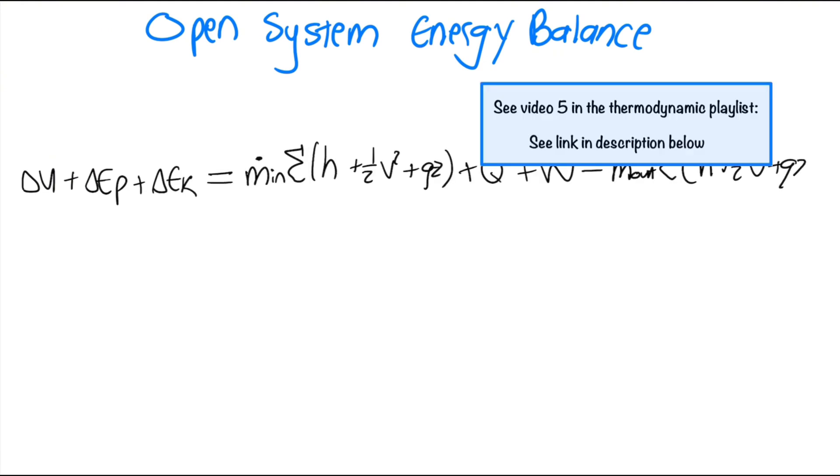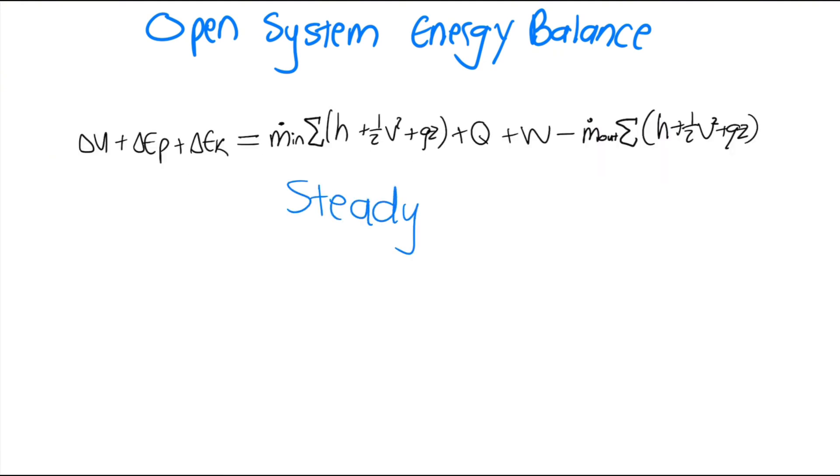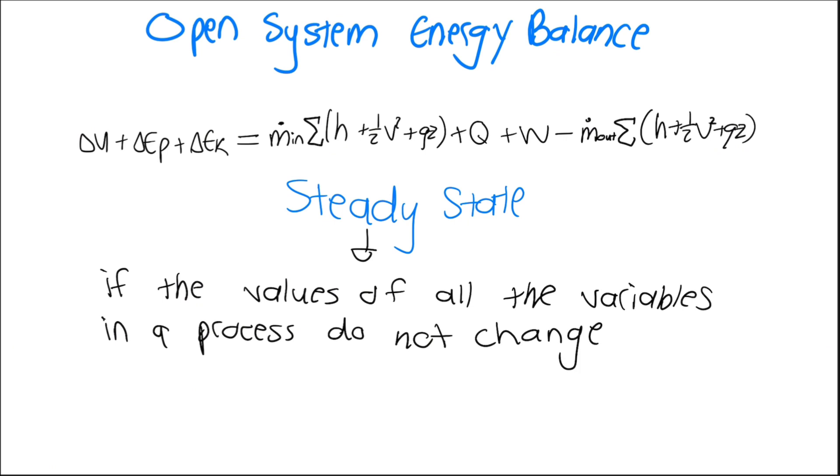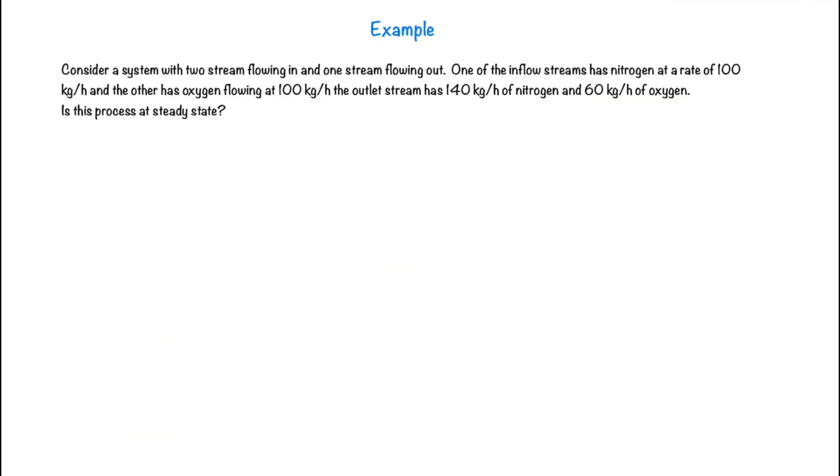In the examples we will look at, we analyze the systems at steady state. If the values of all the variables in a process do not change with time, the process is said to be at steady state. In other words, the amount of material going in is the same as the amount of material coming out. There is no build-up within the system.